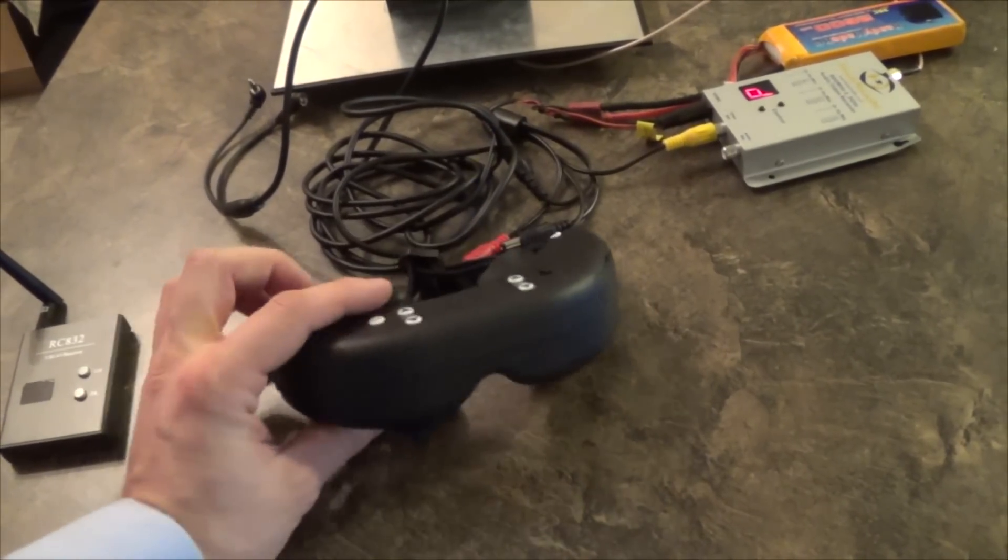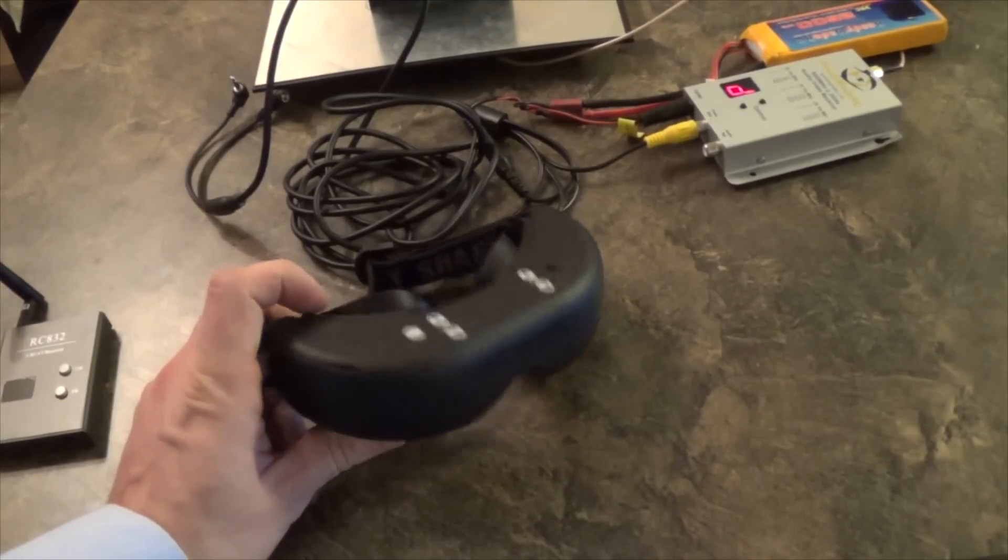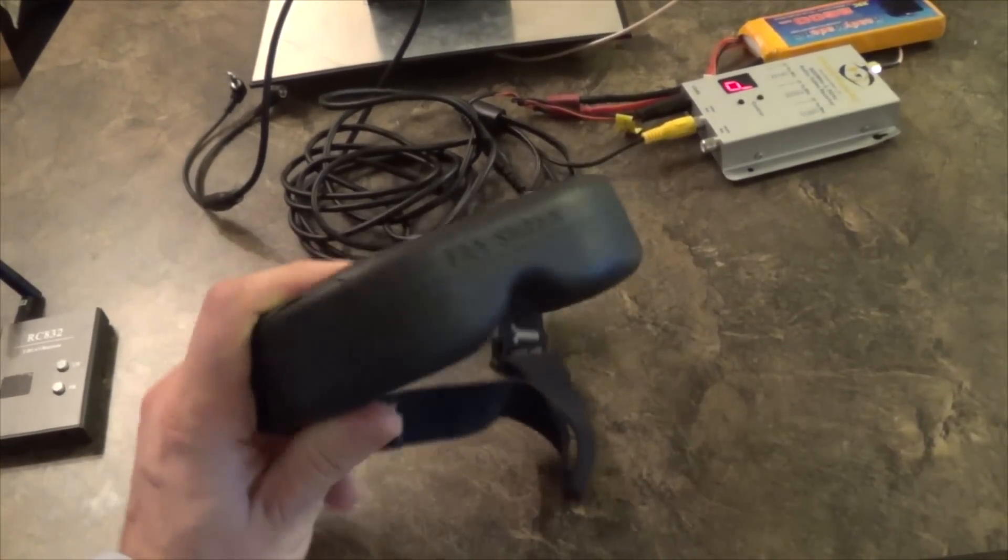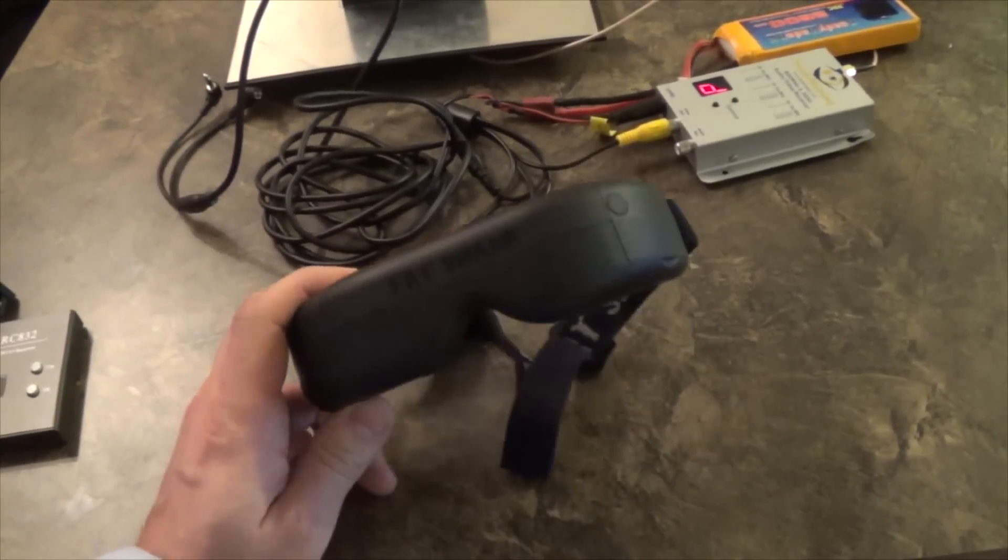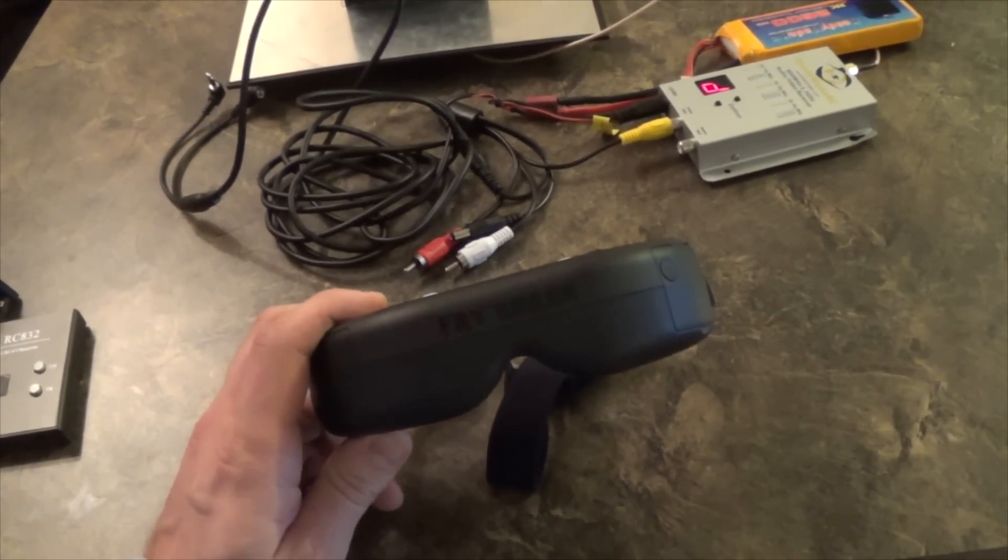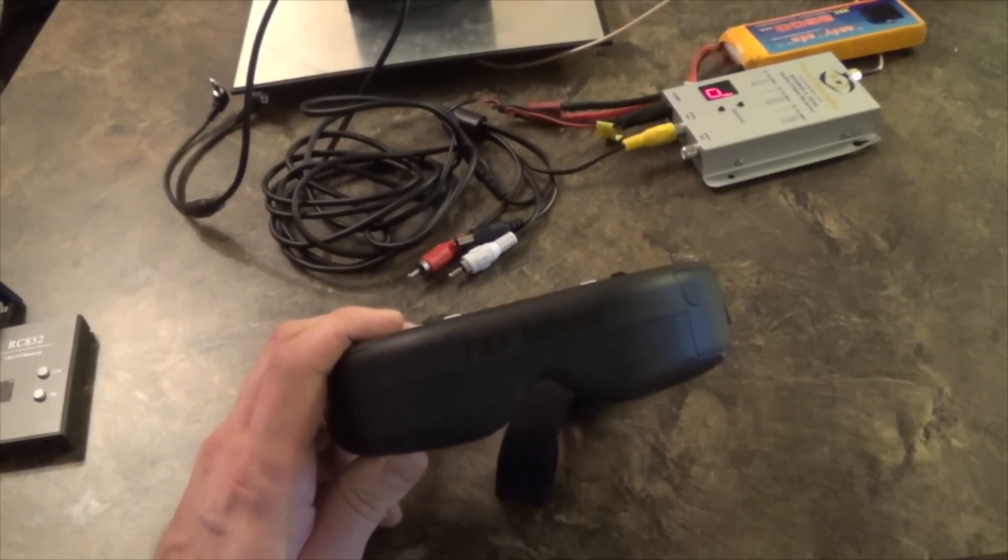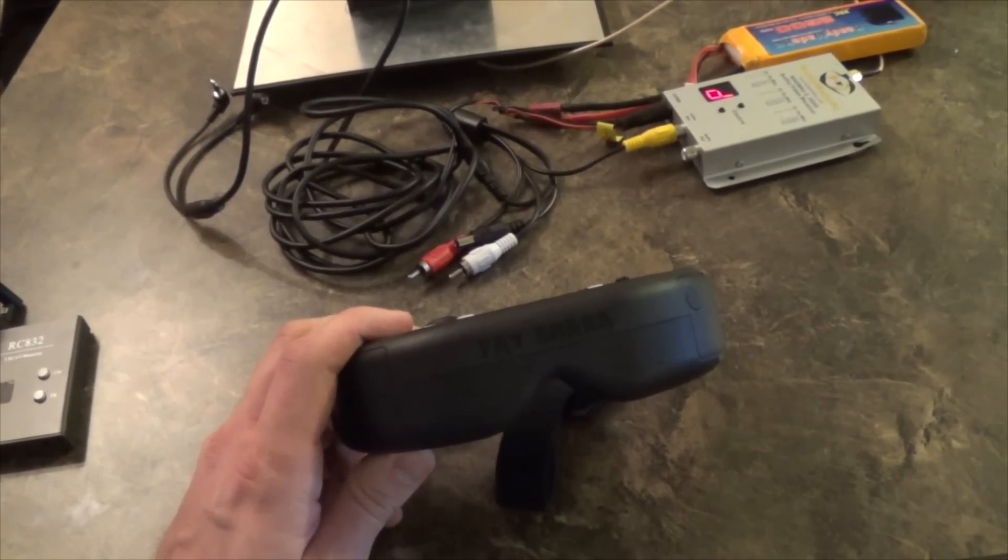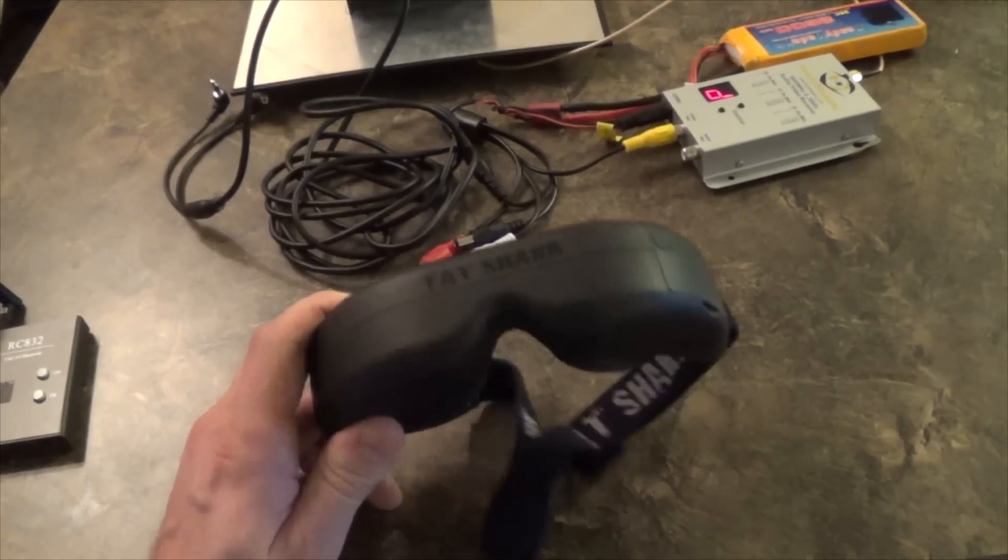One of the systems that you can have for a ground station is these Fat Shark goggles. These will receive the video signal. The most important thing for whatever you're receiving the video signal is that it doesn't go to a blue screen. You can use a TV or whatever you want as long as it does not go to a blue screen when there's a signal degradation, because that's really important.